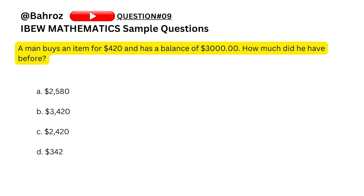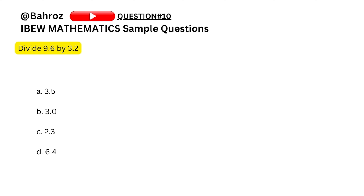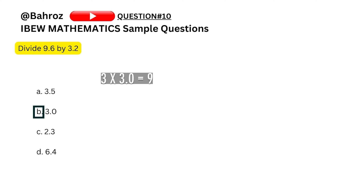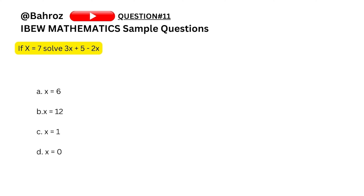Question nine: a man buys an item for $420 and has a balance of $3,000 — how much did he have before? He had more than $3,000 because after spending $420 he is left with $3,000, which means the answer is $3,000 plus $420, which is B. Question ten: divide 9.6 by 3.2. Using elimination, I round 3.2 to 3 and check: 3 times 3 is 9, so B is close. Verifying: B is 3, and 3.2 times 3 equals 9.6, so B is the answer.